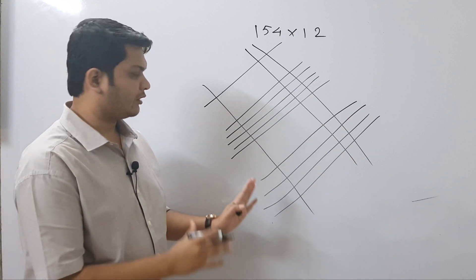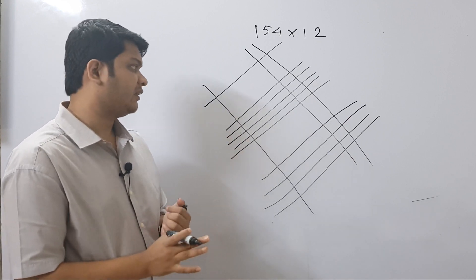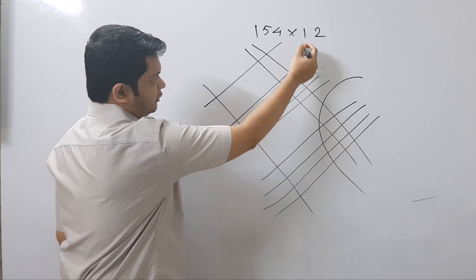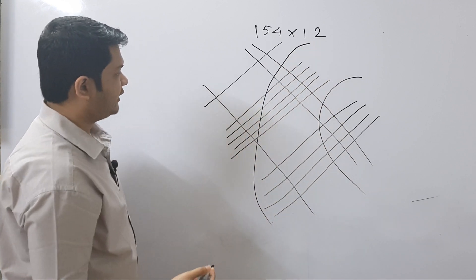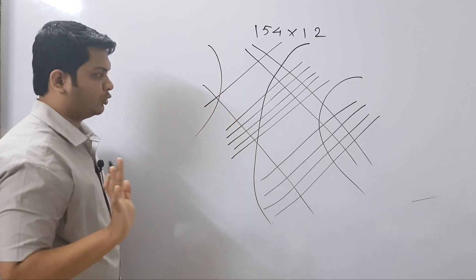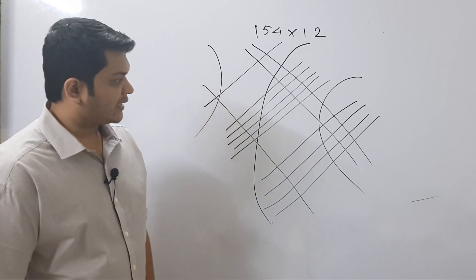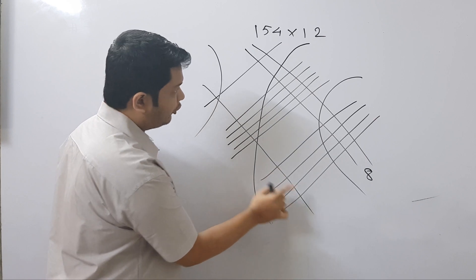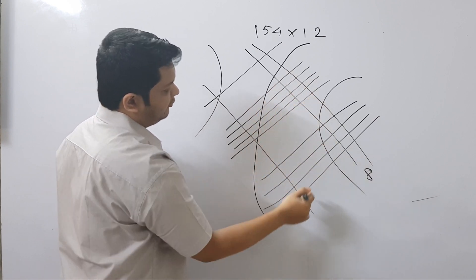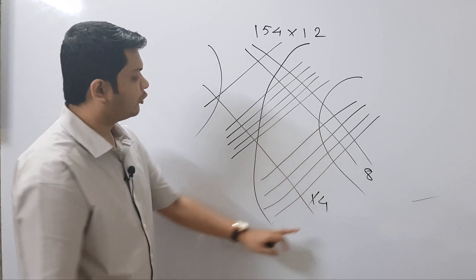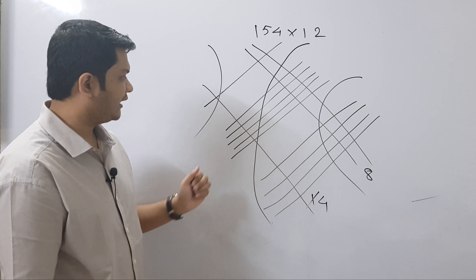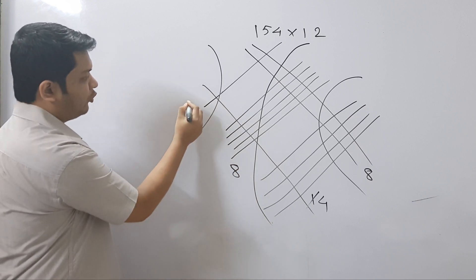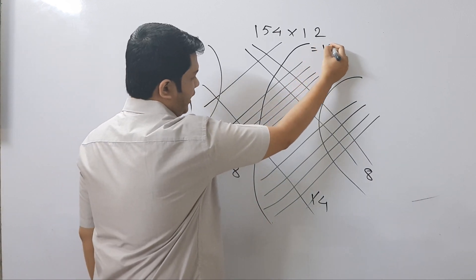Now the grouping part is pretty important here. This is our first group, this two-part section is our second group, this is our third group, and this is our fourth group. Let us count: the first group has 1, 2, 3, 4, 5, 6, 7, 8 — so we have 8 here. The next group has 1, 2, 3, 4 and then 1, 2, 3, 4, 5, 10 — so 14. We write 4 here and this 1 carries to the next place. Then we have 1, 2, 3, 4, 5, 6, 7 plus 1 carry = 8. And the leftmost group has 1. So the answer is 1, 8, 4, 8.